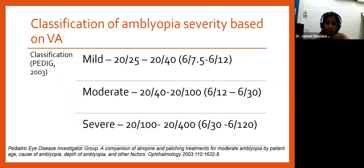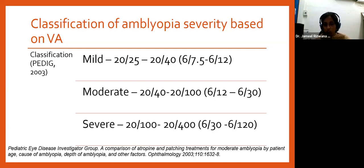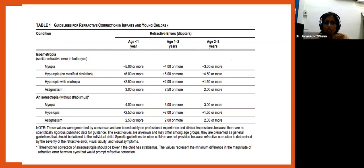Based on severity of visual acuity, the Pediatric Eye Disease Investigator Group proposes classifying amblyopia as mild, moderate, or severe — what we previously called shallow, moderate, or deep. The 20-foot Snellen cutoffs have been converted to 6-meter equivalents. These are the different visual acuity levels used when classifying amblyopia by severity.